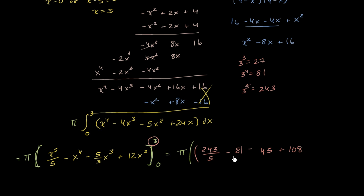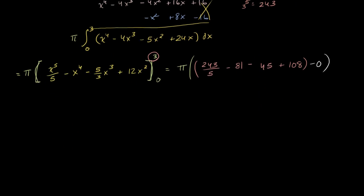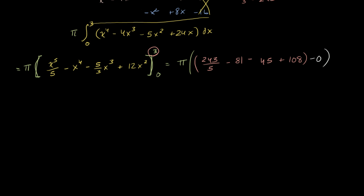These problems with hairy arithmetic are always the most stressful. We then subtract the whole thing evaluated at 0, but luckily every term is 0 at x equals 0, so we subtract out 0, which simplifies things quite a bit. Now we just have to do some hairy fraction arithmetic.